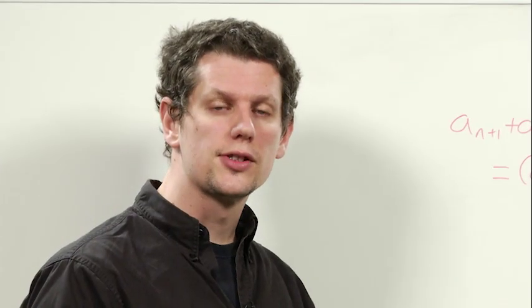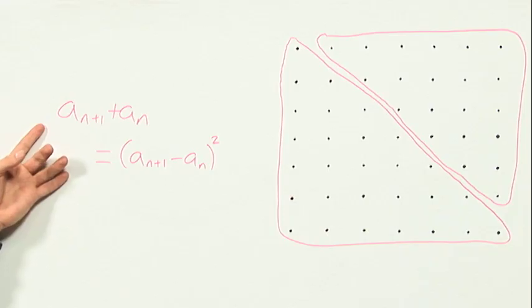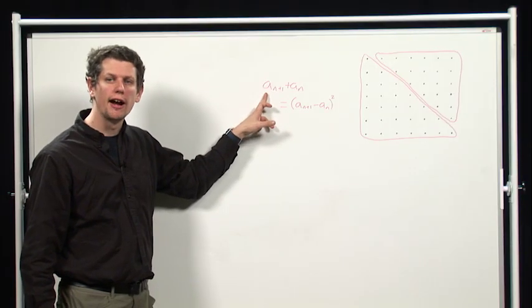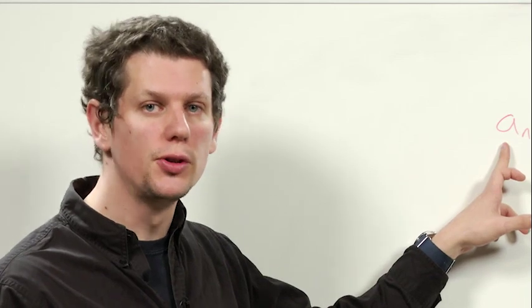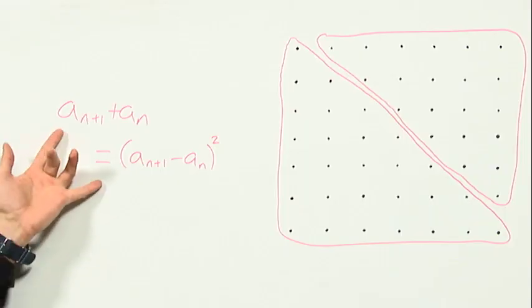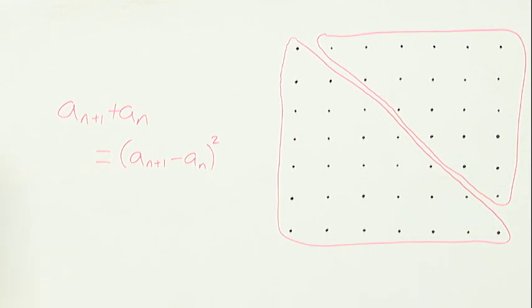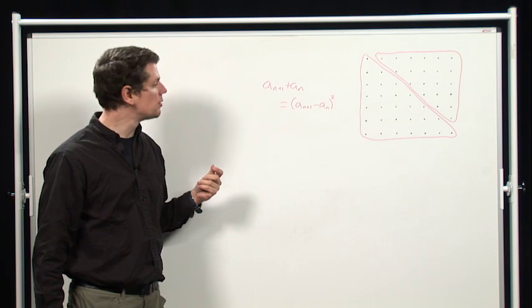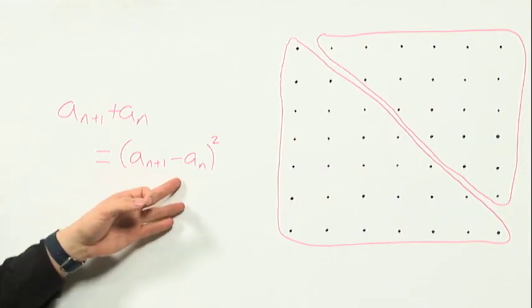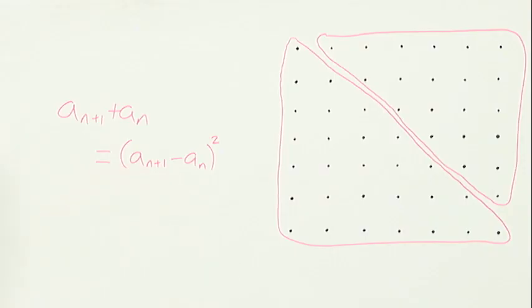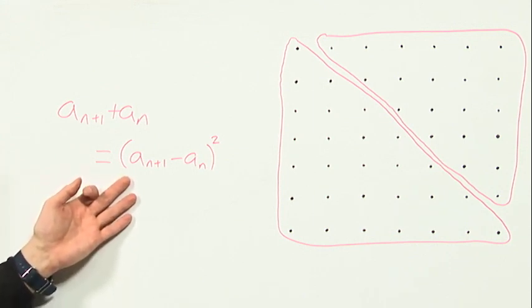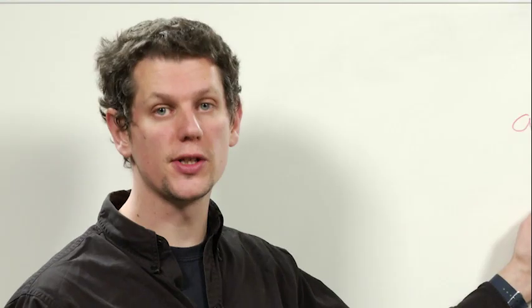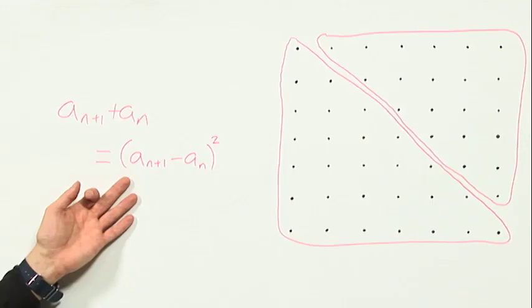Now what does this tell us? If we know what an is, then this is a quadratic equation for an plus 1. Quadratic equations have at most two roots. So we've multiplied this equation out, found a quadratic equation. It could have at most two solutions. But what we've said means that we know what those two solutions are if we know that an is a triangular number. An plus 1 could be the next triangular number up or the next triangular number down. It could be either of those. And because it's a quadratic equation, it can't be anything else.